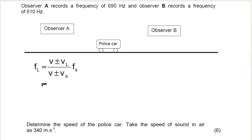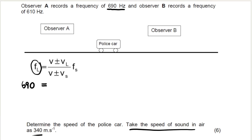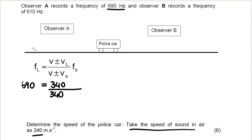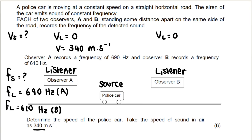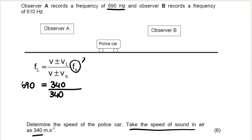If you start to substitute into the equation for observer A, the frequency of the listener is 690 hertz. The speed of sound V is 340 — that goes top and bottom of the equation. The listener is stationary, so VL is zero. We do not know what VS is. So you can see I don't only have one unknown variable — I have two: VS and FS.